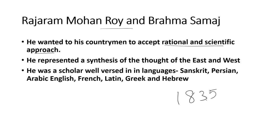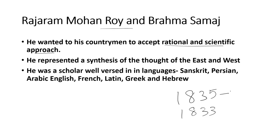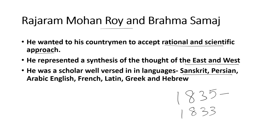Even though Roy died in 1833, before the English system of education was introduced in 1835, he had strongly argued for it. His thought was a synthesis of the philosophy of the East and West. He was a multi-linguist, well-versed in languages like Sanskrit, Persian, Arabic, English, French, Latin, Greek and Hebrew. He studied Sanskrit literature and Hindu philosophy at Varanasi and Quran, Persian and Arabic literature at Patna.